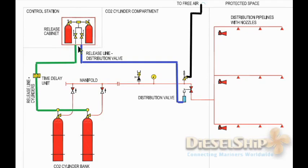The valve control station can be located at different places, but definitely outside the space to be protected. Here the protected space is the engine room, so it must be outside the engine room; otherwise you can't operate it in the event of fire. There are three possibilities for location: the fire control station, the CO2 room itself, and just outside the entrance of the engine room.